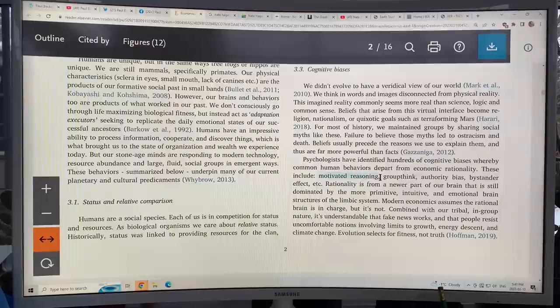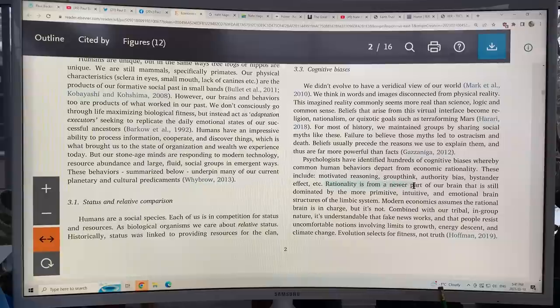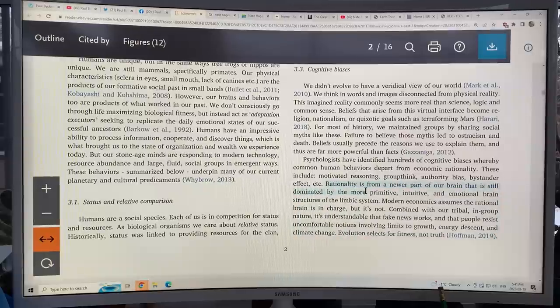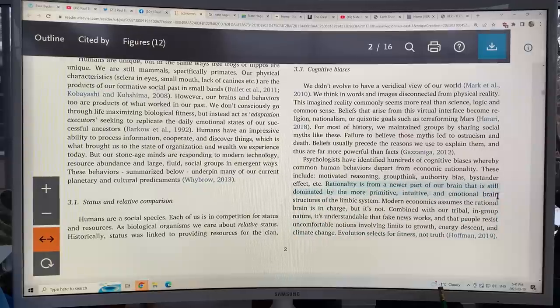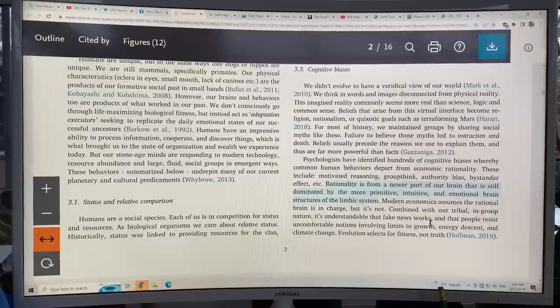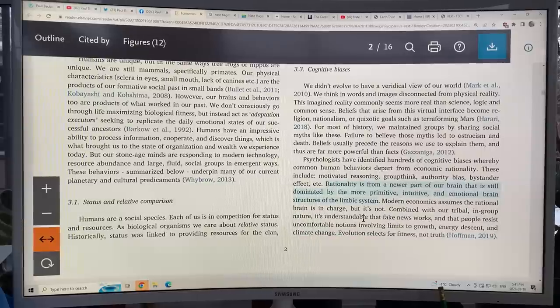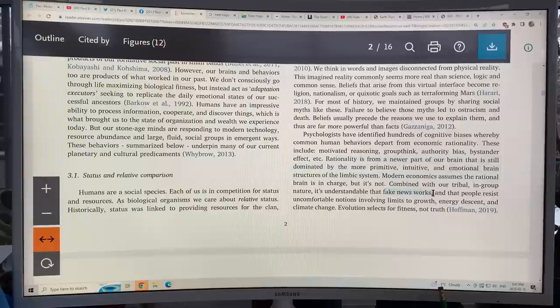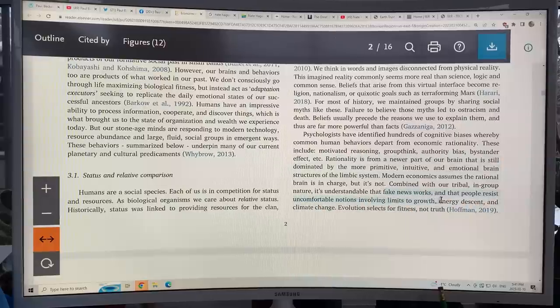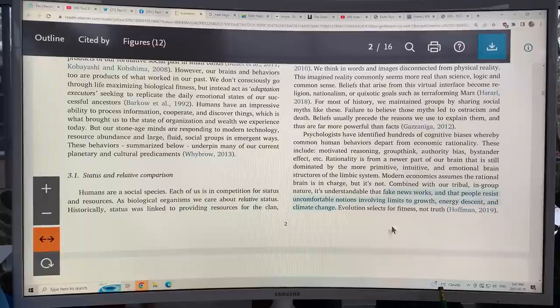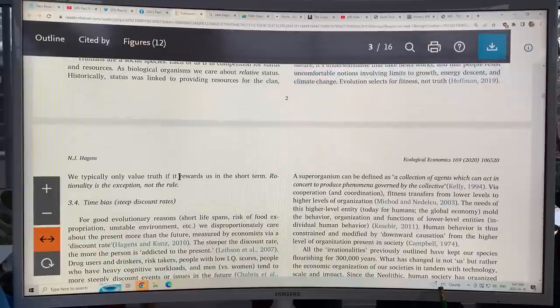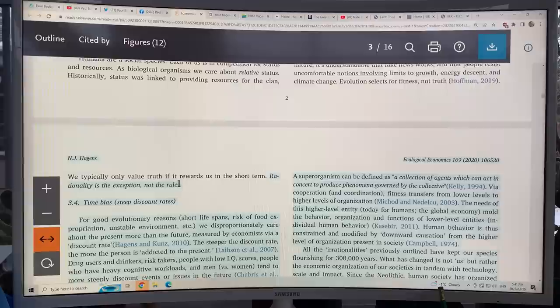So there's hundreds of these cognitive biases that make human behaviors depart from economic rationality. For example, motivated reasoning, group think, authority bias, bystander effect. The rational part of our brain is a newer part of our brain. It evolved later. It's still dominated by the more primitive, intuitive and emotional brain structures of the limbic system. Modern economics assumes the rational brain is in charge, but it's not. Combined with our tribal in-group nature, it's understandable that fake news works. People resist uncomfortable notions involving limits to growth, energy descent, and climate change. Evolution selects for fitness, not truth. We typically value truth if it rewards us in the short term. Rationality is the exception, not the rule.